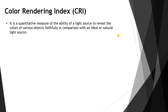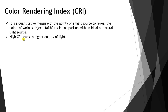This leads us to the Color Rendering Index. By definition, it is a quantitative measure of the ability of a light source to reveal the colors of various objects faithfully, in comparison with an ideal or natural light source. A light source has a CRI value from 0 to 100. The closer the source is to white light, the higher its rendering index — up to 100.